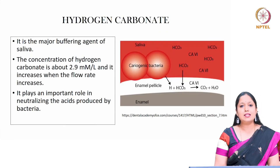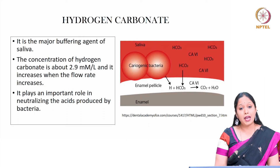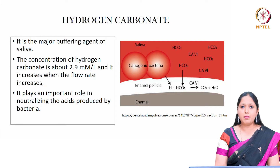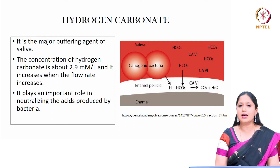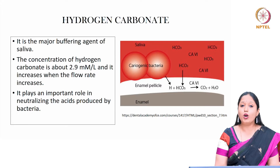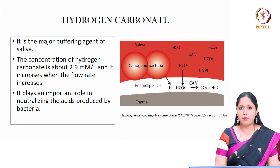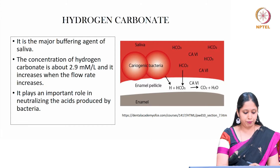The next component is hydrogen carbonate, or HCO3. It is a major buffering agent of saliva. The concentration of hydrogen carbonate is 2.9 millimoles per liter and it increases when the salivary flow rate increases. It plays a very important role in neutralizing the acids produced by bacteria which cause dental caries or tooth decay.